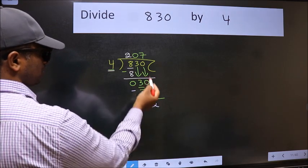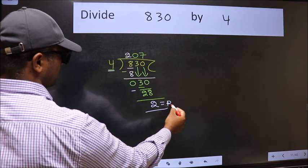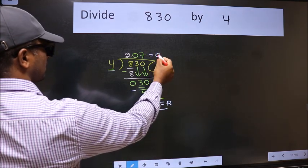No more numbers to bring it down. So, we stop here. This is our remainder and this is our quotient.